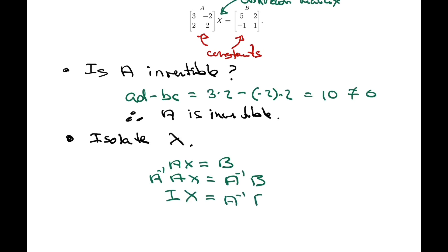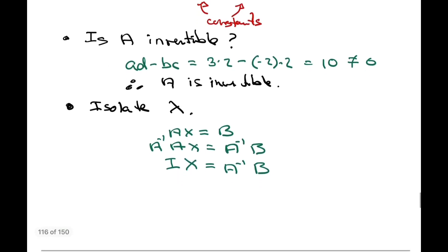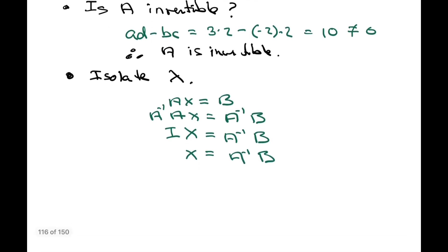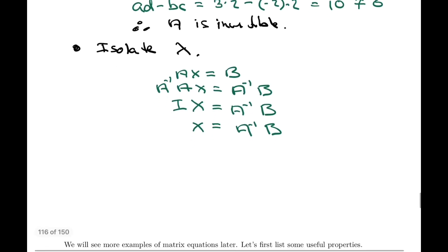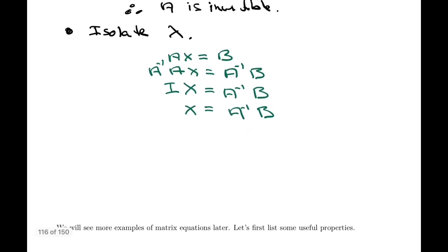I'm not even putting brackets on the left because matrix multiplication is associative. We can think of doing A inverse times A first, and that gives us I times X equals A inverse times B, which is just X equals A inverse times B. Now we're ready to solve for X by actually finding the inverse.